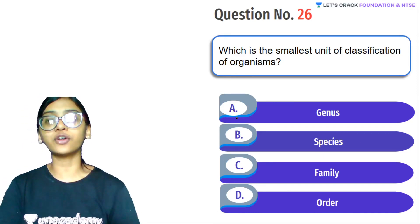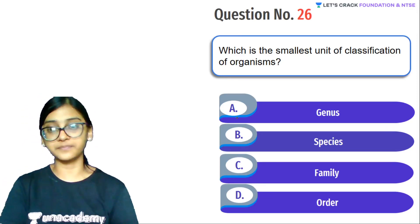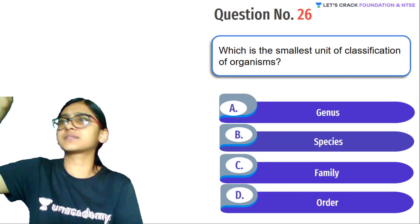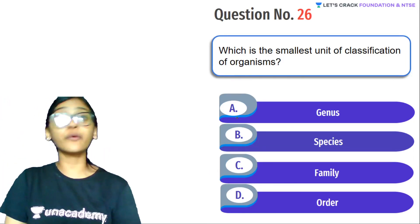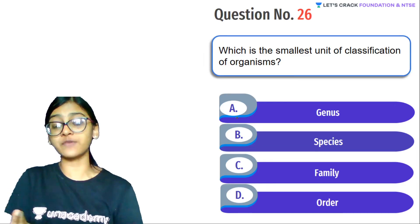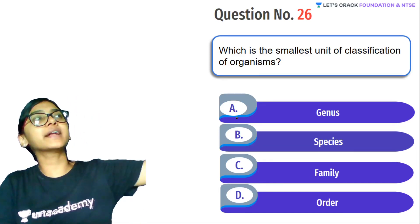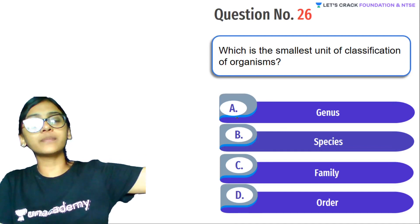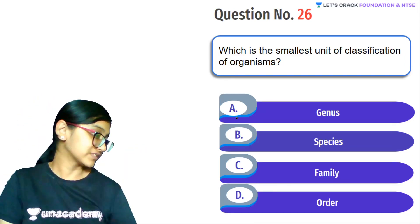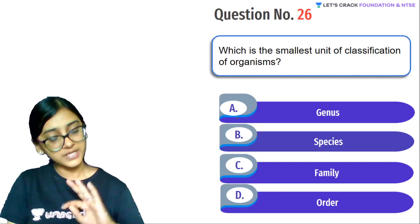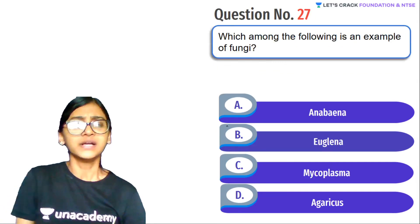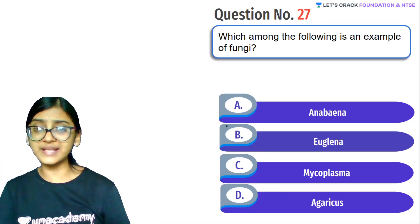Next question: Which is the smallest unit of classification of an organism? You know the hierarchy: kingdom, phylum, class, order, family, genus, species. Which is the highest? Kingdom. Which is the lowest or smallest? The answer is species — very simple.